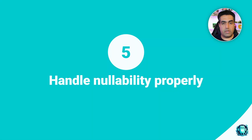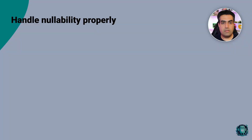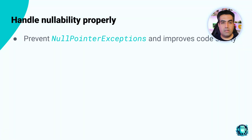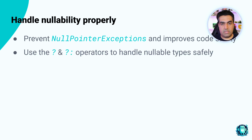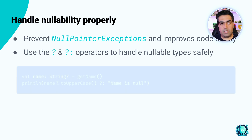Number five: handle nullability properly. Leveraging Kotlin's null safety features prevents NullPointerExceptions and improves code safety. Use the safe call operator and the Elvis operator to handle nullable types safely.